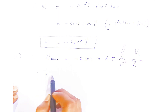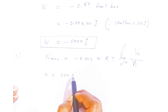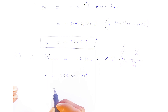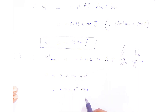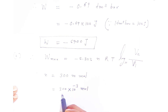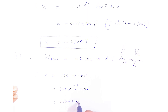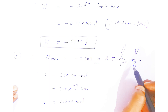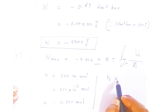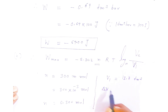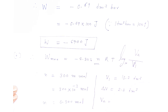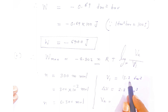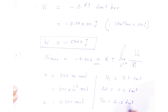Now, the number of moles given is 300 millimoles. We convert this to moles: 300 × 10⁻³ = 0.3 mol. Temperature is 300 K. The initial volume V1 is 13.7 dm³ and ΔV is 2.3 dm³. So the final volume V2 = 13.7 + 2.3 = 16 dm³.